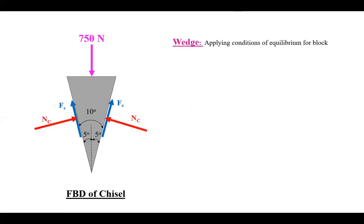To apply the equations of equilibrium, we always need the angles made by inclined forces. For sigma Fx and sigma Fy, we resolve those inclined forces. Constructing the geometry: the total wedge angle is 10 degrees, so the half angle is 5 degrees. Therefore the remaining angle, 90 minus 5 degrees, becomes 85 degrees on each side. To find the angles of the inclined forces Nc and Fc, we extend lines and construct a right-angle triangle.